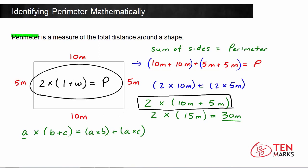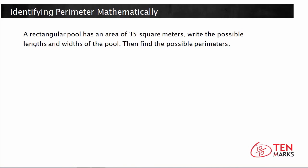Now let's use this to solve a problem. A rectangular pool has an area of 35 square meters. Write the possible lengths and widths of the pool, and then find the possible perimeters. To begin, remember that area is the product of length times width.